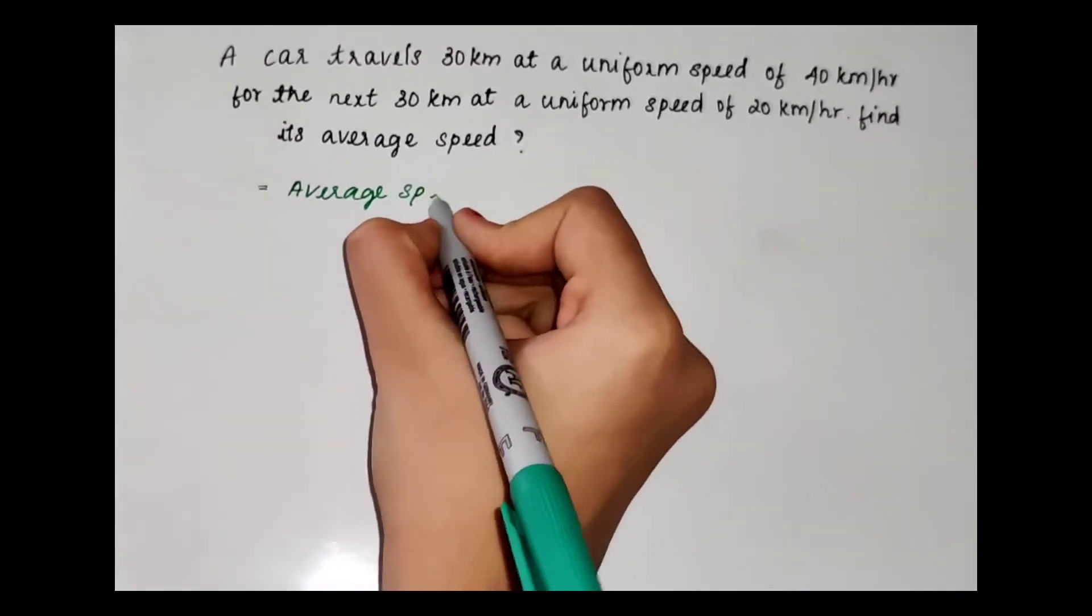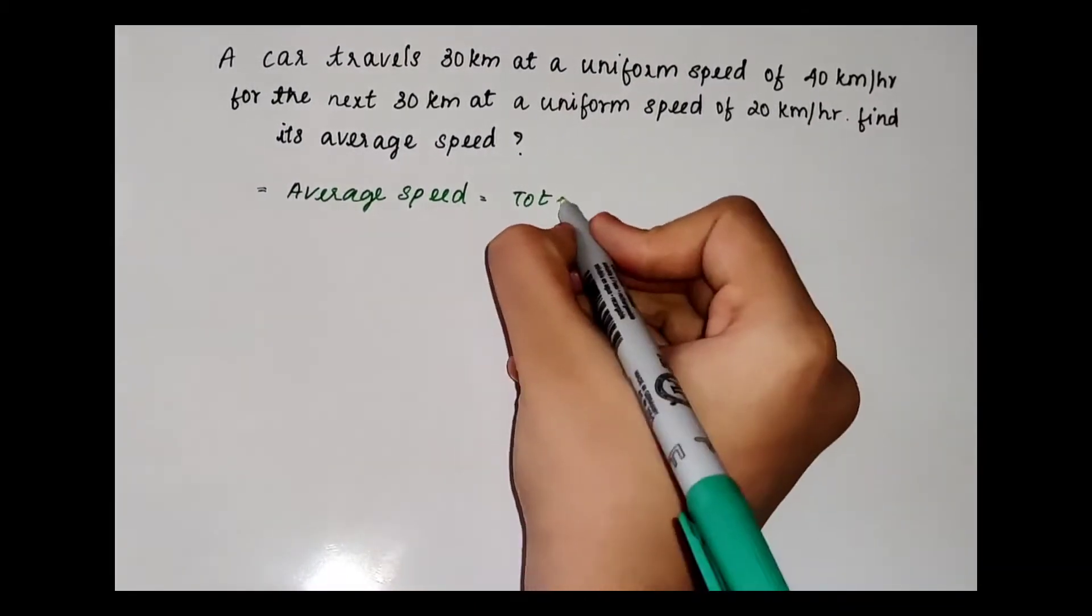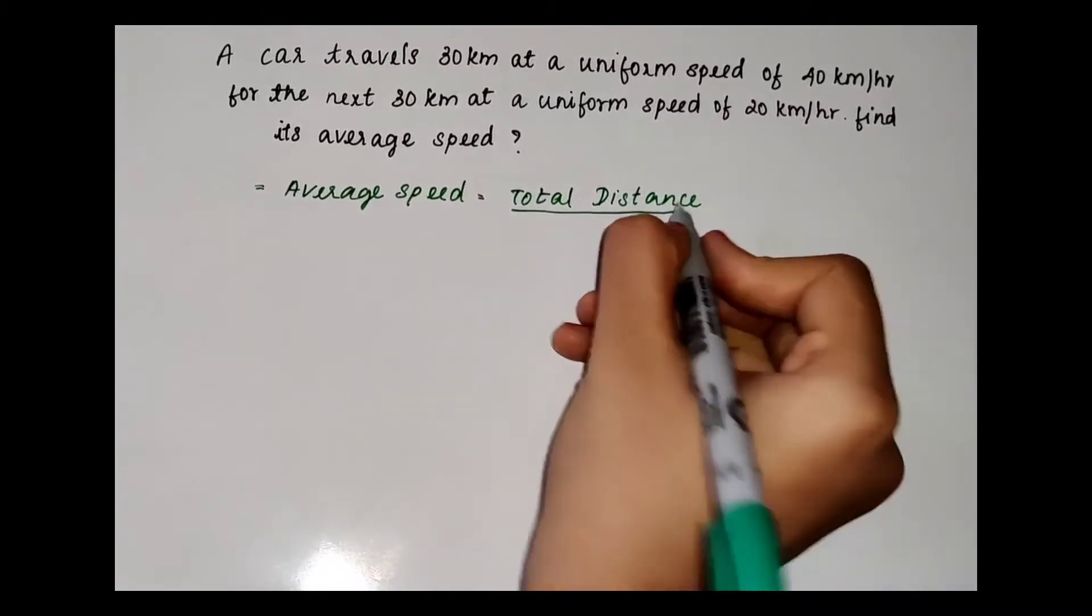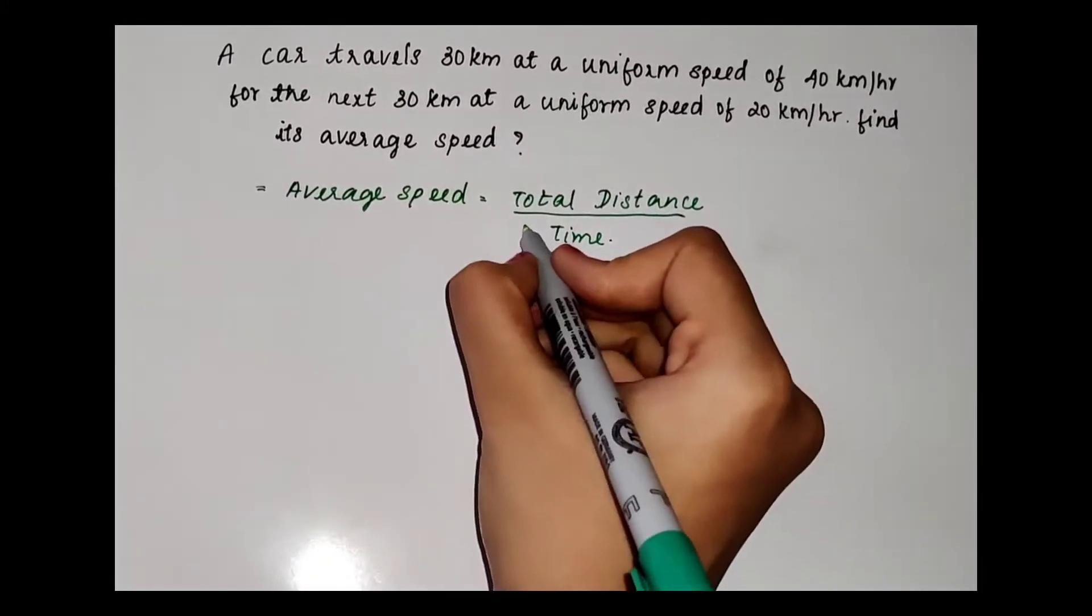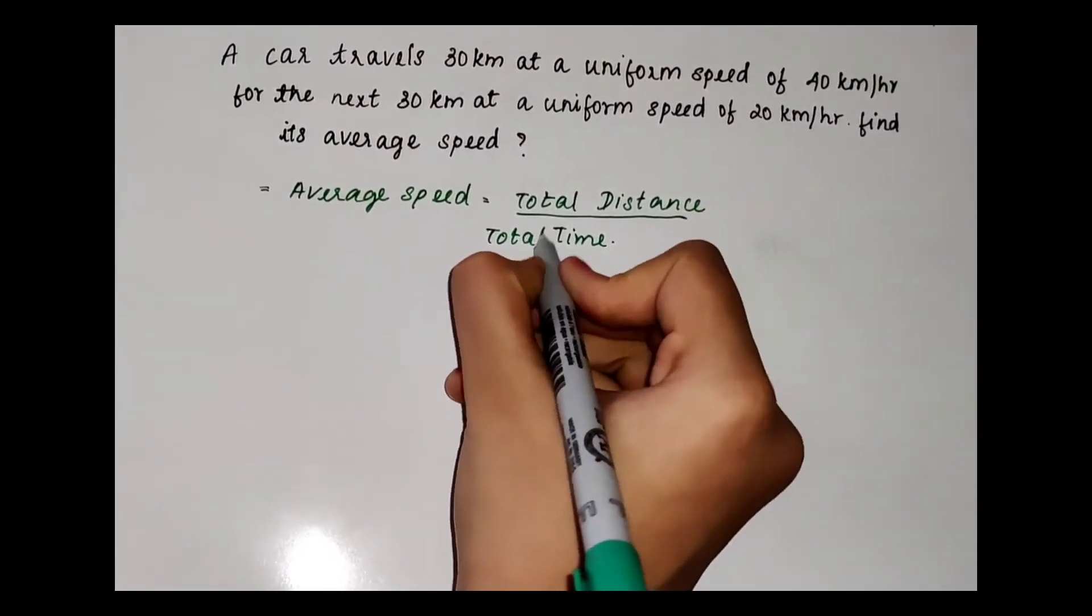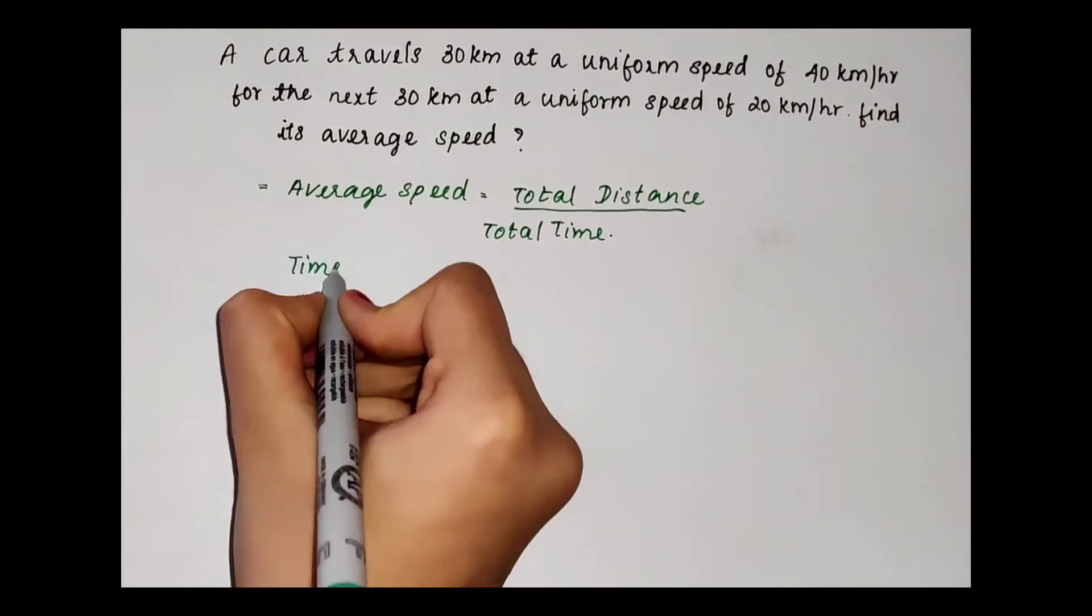We know the average speed is equal to total distance by total time. Time is equal to distance by speed.